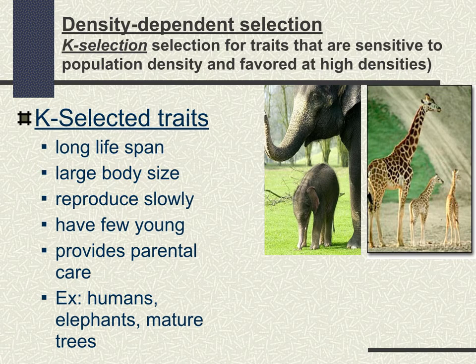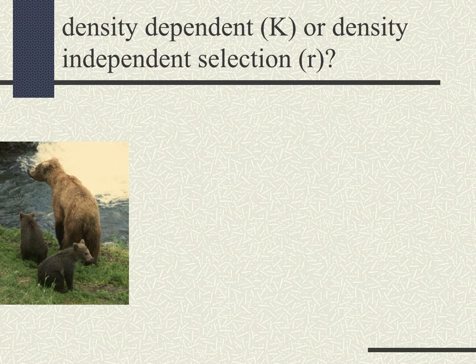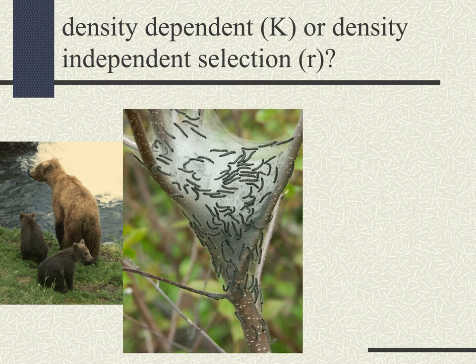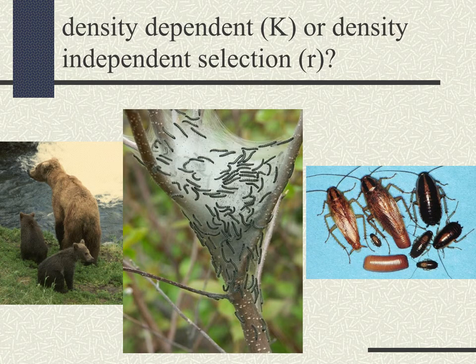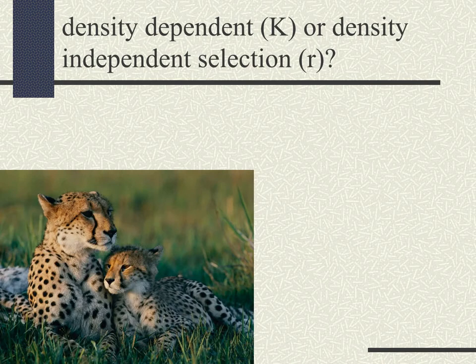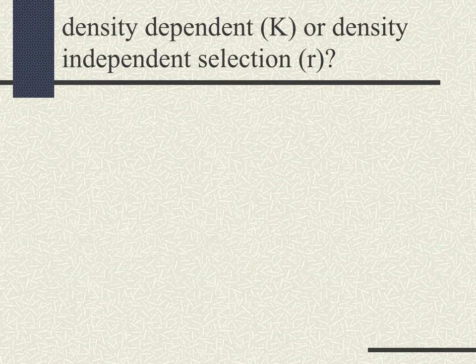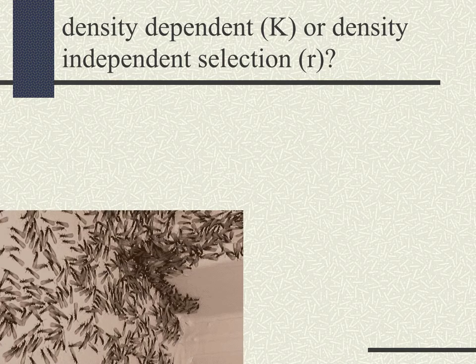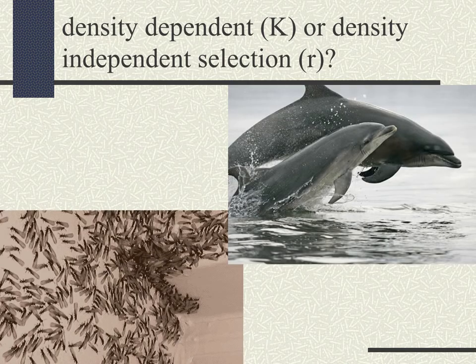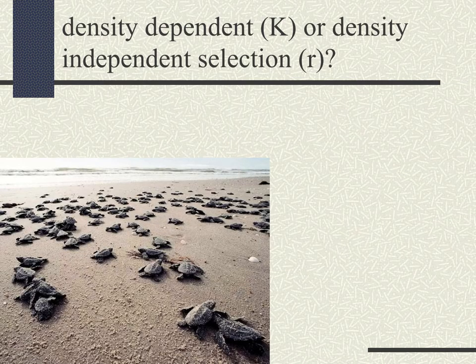Let's go through some examples and identify whether we're talking about density dependent (K-selection) or density independent (R-selection). Some examples are clearly R-selected, others are density dependent K-selected, and some — like sea turtles — are exceptions.